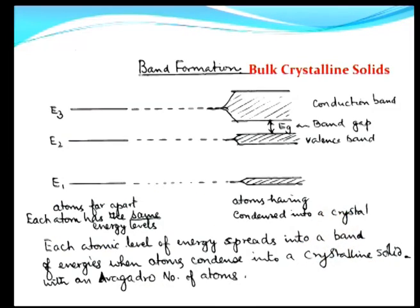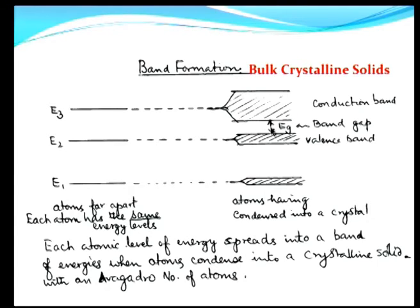To recap: the width of the band representing outer electrons — the conduction band or valence band — is of the order of a few electron volts. In semiconductors and insulators, as opposed to metals, there is a forbidden energy gap where electrons cannot have states. This band gap — between the bottom of the conduction band and the top of the valence band — is about 1.1 eV for silicon and 1.43 eV for gallium arsenide.